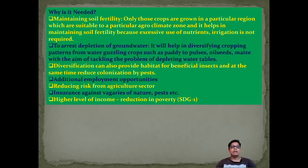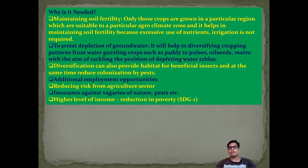The need for horticulture includes maintaining soil fertility — continuous crop cultivation can cause soil to become infertile, and horticulture helps restore and maintain fertility and nutrients, reducing the need for irrigation. It also helps address the depletion of groundwater, since water-guzzling crops like paddy, pulses, and maize require huge amounts of water, whereas horticulture or market gardening uses only some water.